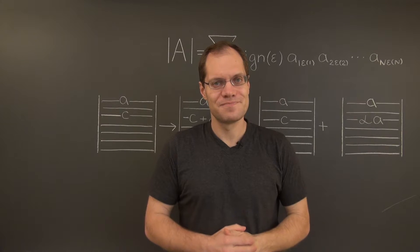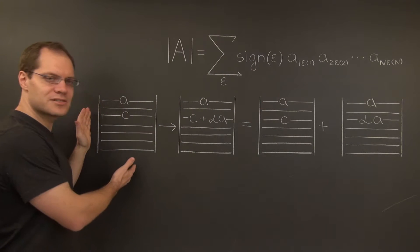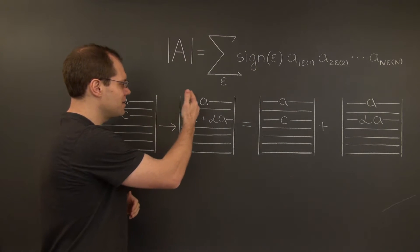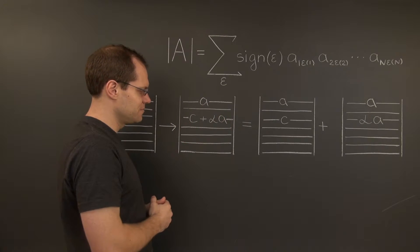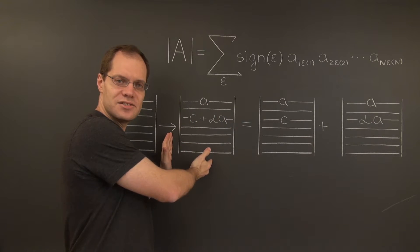Here's how the proof goes. Consider a square matrix, and add a multiple alpha of the first row to the third row. Now we have to analyze this determinant.